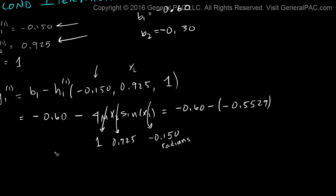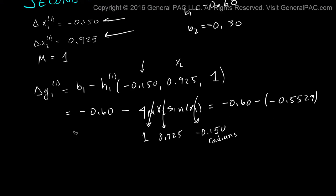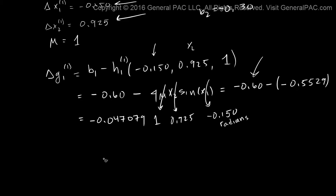That equals negative 0.047079. Make sure you do this math to verify — we're taking negative 0.6 and adding 0.5529, which gives that result. This also matches the book, so we know it's correct.